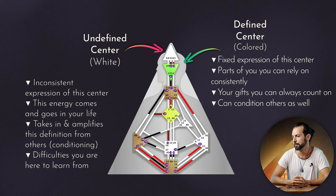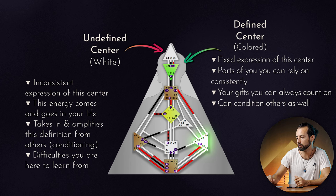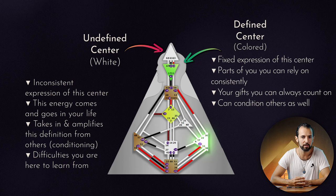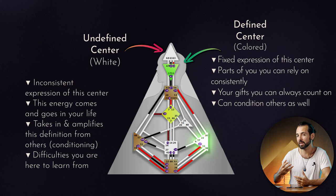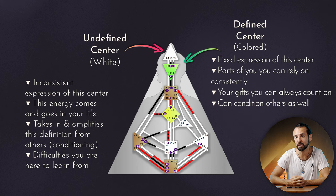The white centers also amplify the energy of other people. In the case of the emotional center — the solar plexus on the bottom right — if you have an undefined solar plexus you might amplify the emotions of other people. You might feel like you don't want to upset people, don't want to confront them with your needs or your boundaries, because you're scared of that emotional reaction amplified through your emotional center. These are also areas where we learn the most in life — the lessons we came here to learn. People who have more open centers are generally more sensitive to the environment around them.